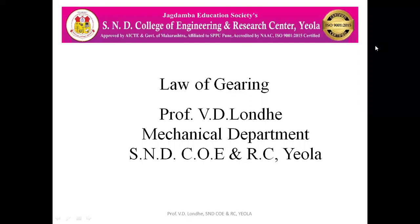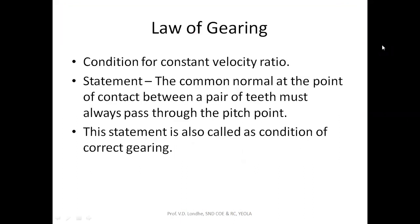Today we are going to see the law of gearing for a gear pair. We will see its statement and the line diagram for a gear pair. The law of gearing is the condition for the constant velocity ratio for a gear pair, in which the velocity for each and every gear is considered. The statement is: the common normal drawn at the point of contact between a pair of teeth must always pass through the